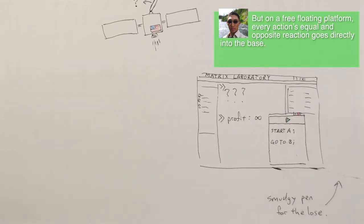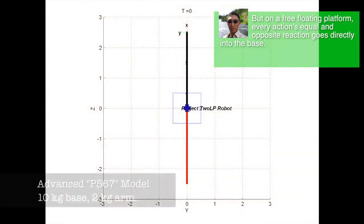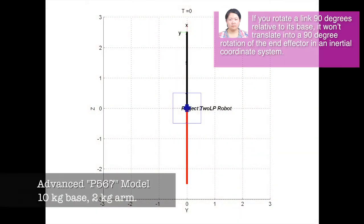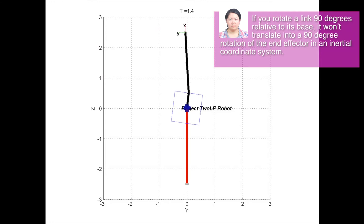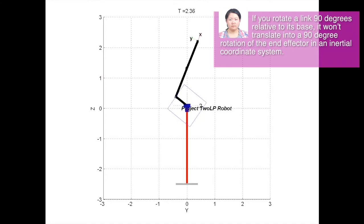But on a free-floating platform, every action's equal and opposite reaction goes directly into the base. If you rotate a link 90 degrees relative to the base, it won't translate into a 90 degree rotation of the end effector in an inertial coordinate system. It will be something less,